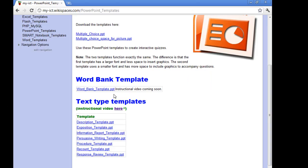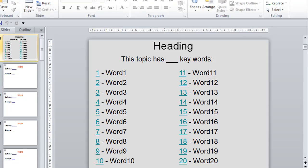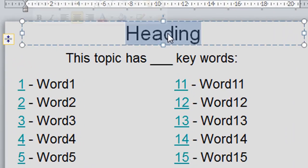And when you do download it, it'll look something like this. Where it says heading, simply double click and type in the heading of your topic. Where you see this line, double click and type in how many keywords you've got.